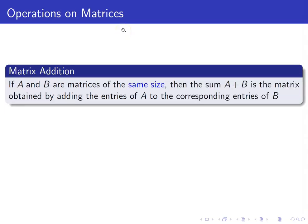We will now discuss the different operations on matrices. Just like real numbers, we can perform operations on matrices. For our first operation, we discuss matrix addition. If A and B are matrices of the same size — take note that matrix addition is only defined for matrices having the same size — then the sum A plus B is the matrix obtained by adding the entries of A to the corresponding entries of B. We will just add the entries entry-wise.